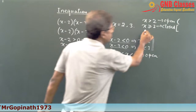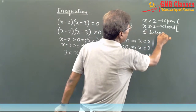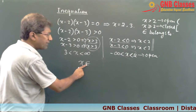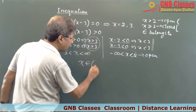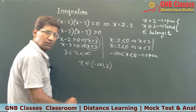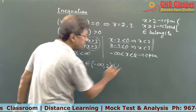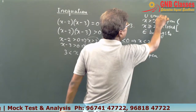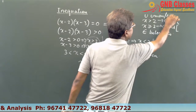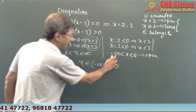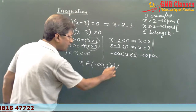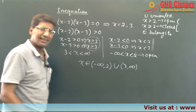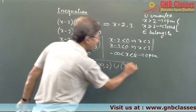So from this inequation we can finally write: x belongs to open minus infinity, open 2, union open 3, open infinity. That will be your final answer.